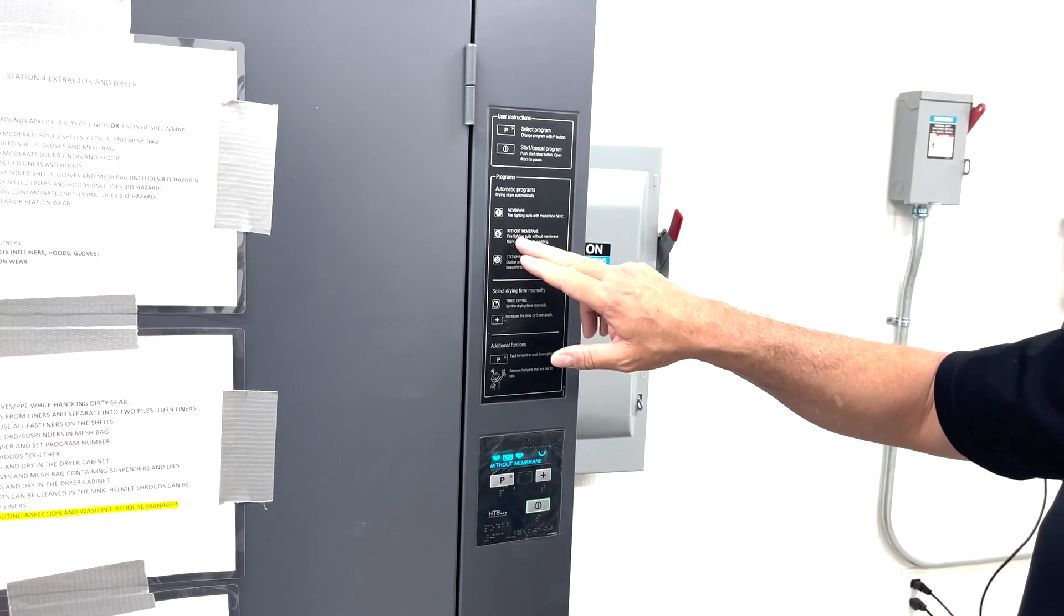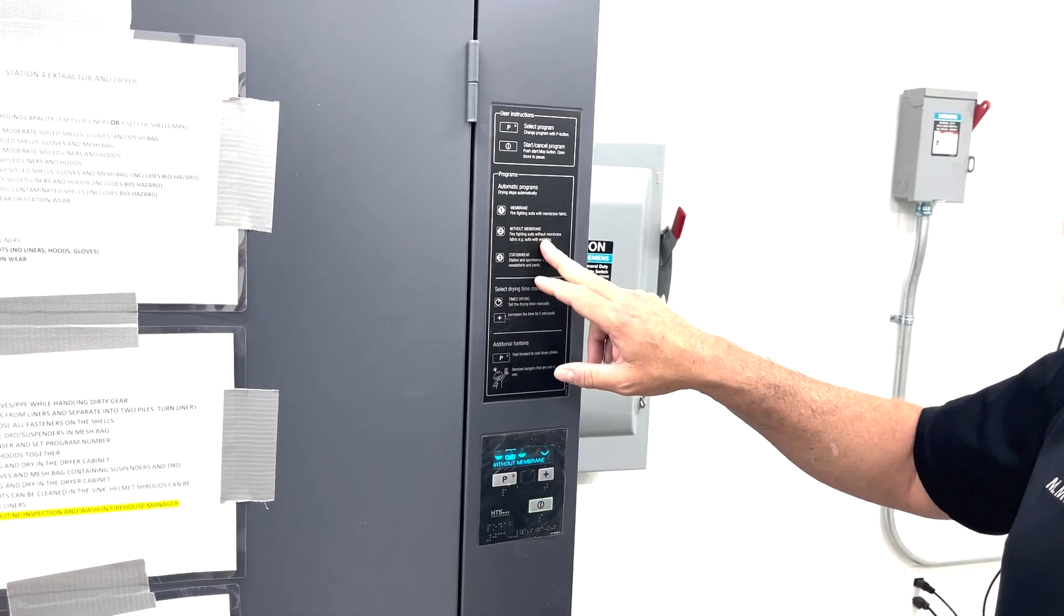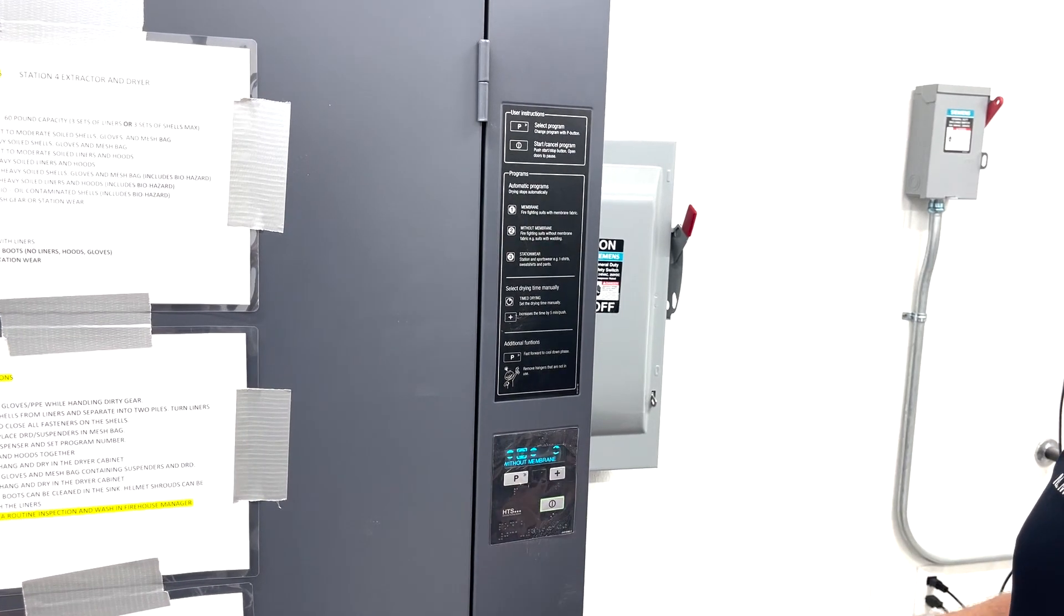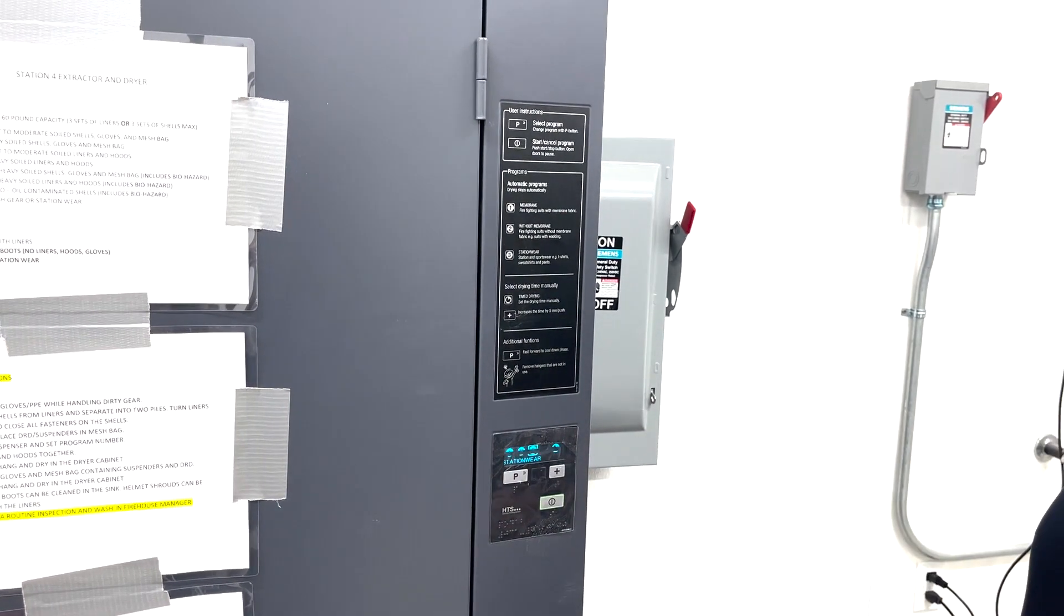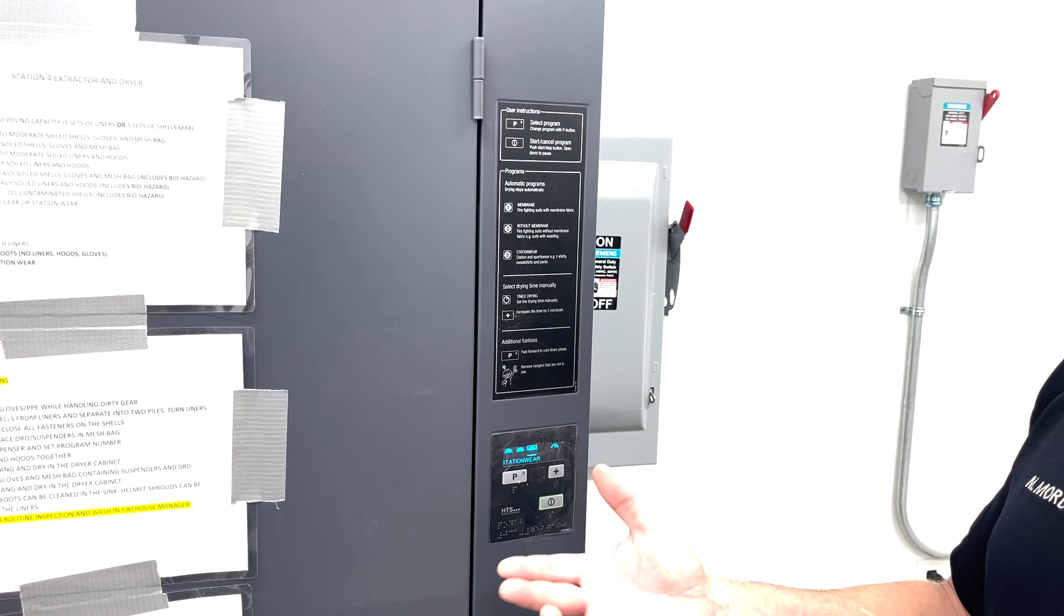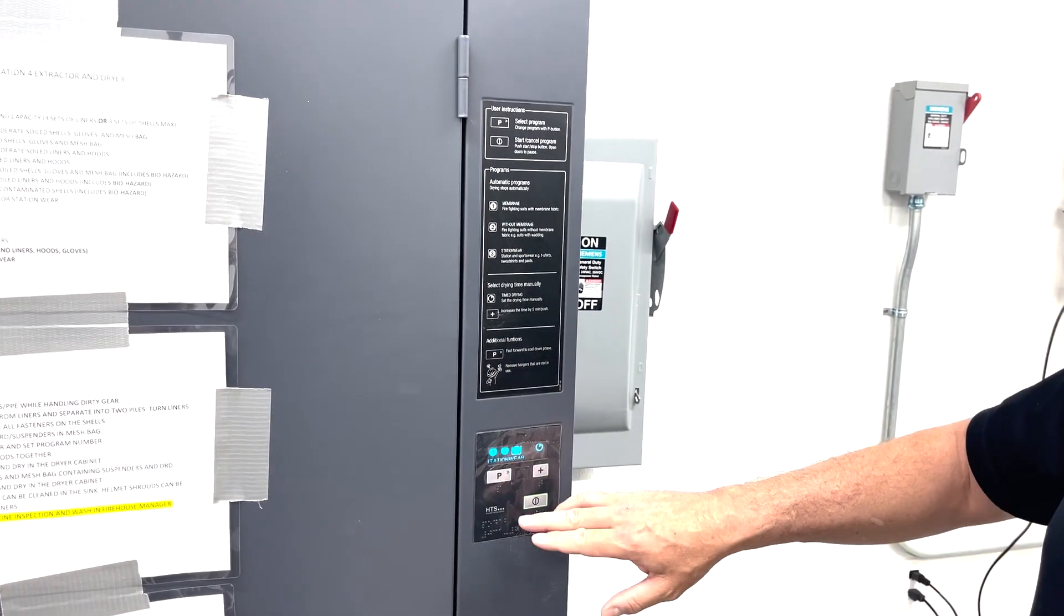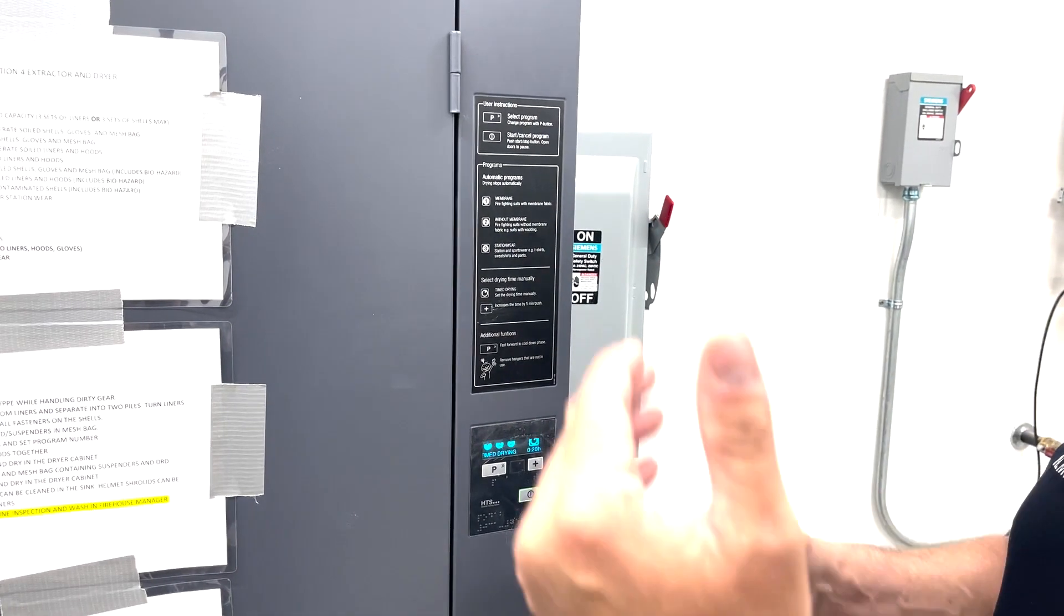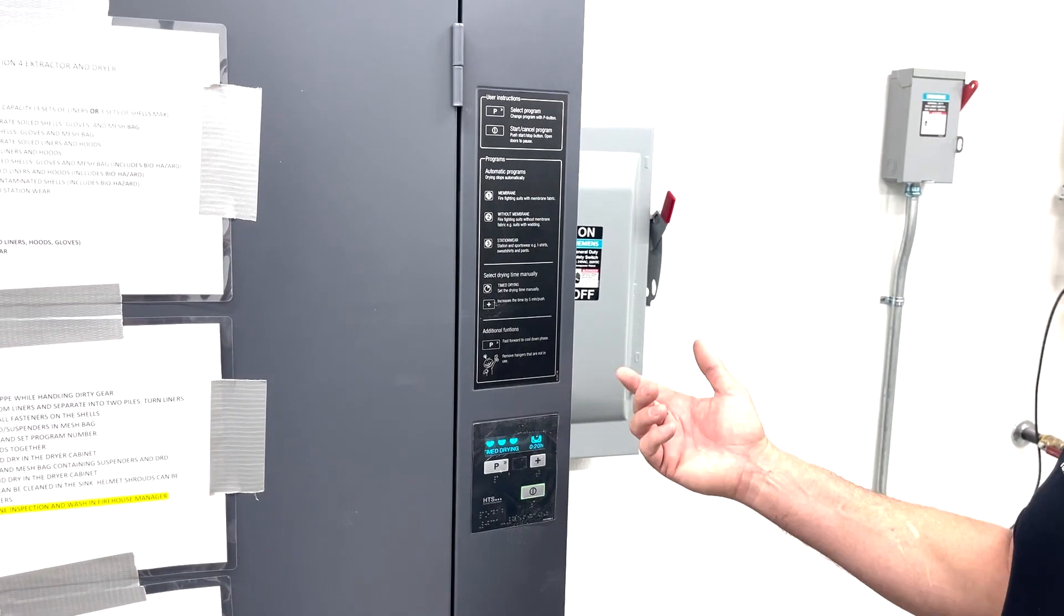Program two—you just hit P again—it goes to program two. This is for firefighting suits without the membrane, so basically if you're just washing shells or just boots or something, you could use two. Then number three is just station wear, basically brush gear or station wear if you need that dried as well.